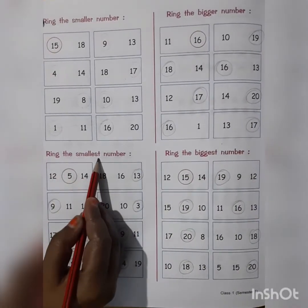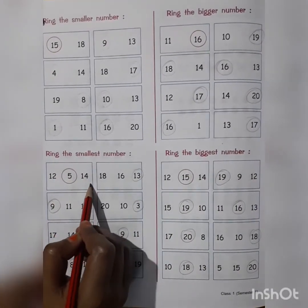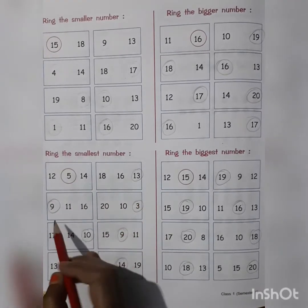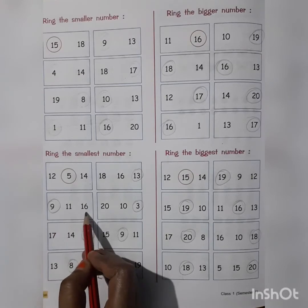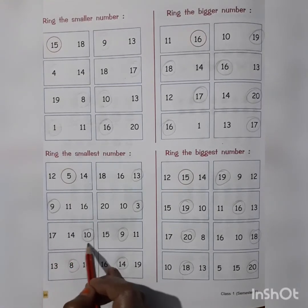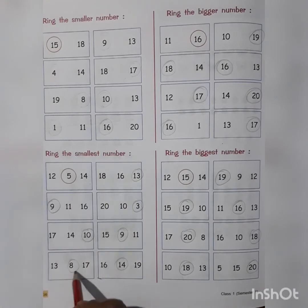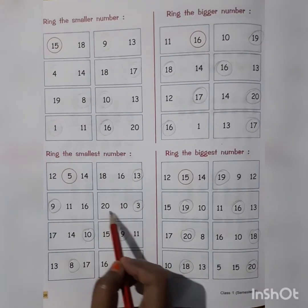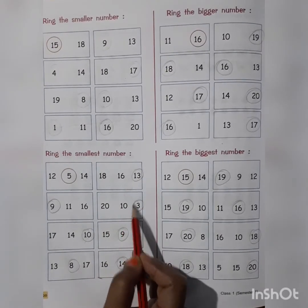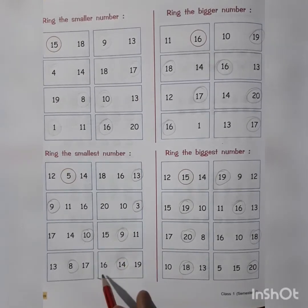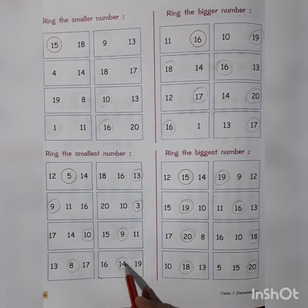Now ring the smallest number. Here, three numbers are given and we have to compare the three numbers to find out the smallest one and ring it. 9, 11, 16 — smallest is 9. 17, 14, 10 — smallest is 10. 13, 8, 17 — smallest is 8. 18, 16, 13 — smallest is 13. 20, 10, 3 — smallest is 3. 15, 9, 11 — smallest is 9. 16, 14, 19 — smallest is 14.